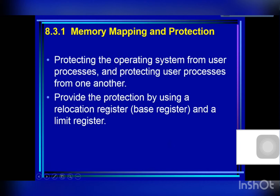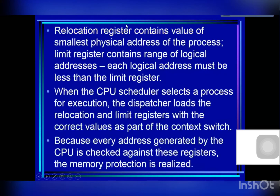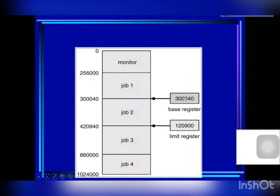Protection is provided using a relocation register, also called a base register, which contains the smallest physical address of the process. The limit register contains the size of the process in terms of logical addresses. For example, the base register holds the smallest physical address for Job 2, and the limit register contains the size of Job 2 in main memory.